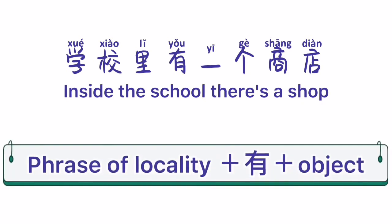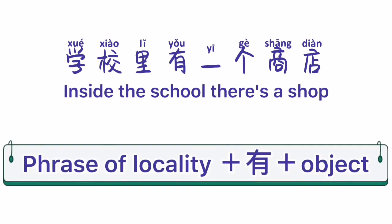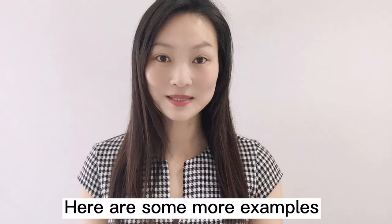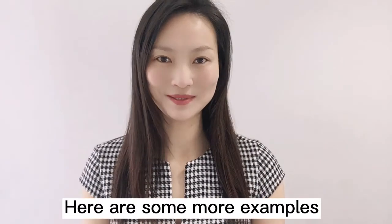Right now, we just need to break it down a little more. Here is the structure: phrase of locality, plus 有, plus object. Here are some more examples.